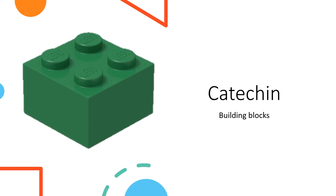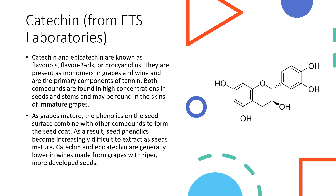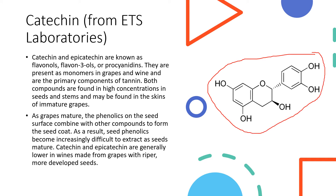We're going to start out with catechin, which is the building block of all things. Here is a copy-and-paste descriptor from ETS laboratories. Catechin and epicatechin are known as flavonols, flavonthriols, or procyanidins. We usually use the term flavonthriols and they're present as monomers in grapes and wine — meaning they exist alone, just floating around loose. The difference between catechin and epicatechin is just the bond direction on this hydroxyl group, so they're really effectively the same.